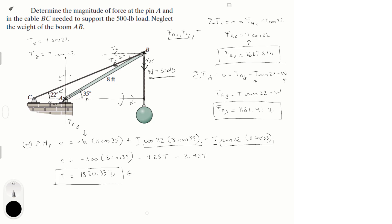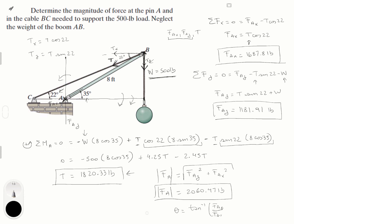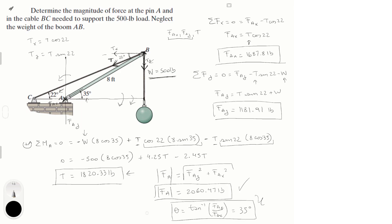Now we find the magnitude of F of A. The magnitude equals the square root of (F of A of Y squared plus F of A of X squared), which equals 2060.47 pounds. The angle of direction is given by the inverse tangent of the Y component over the X component, which equals 35 degrees. So the magnitude is 2060.47 pounds and the direction is 35 degrees.